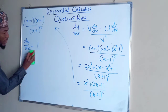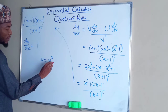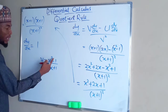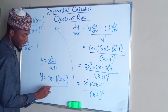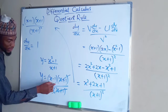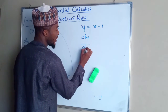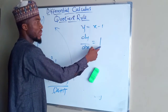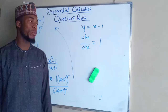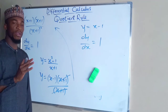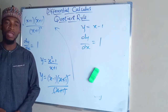You can also simplify before taking the derivative. Since y equals x squared minus 1 divided by x plus 1, by factorization y equals (x minus 1)(x plus 1) divided by (x plus 1). The (x+1) terms cancel, leaving y equals x minus 1. Then dy/dx equals 1, since the derivative of x is 1 and the derivative of a constant is 0. Both methods give the same answer, so students should feel free to use whichever approach they prefer.